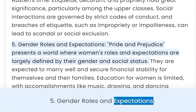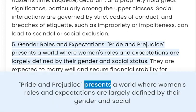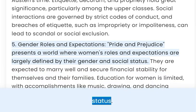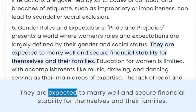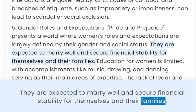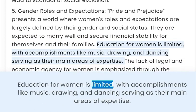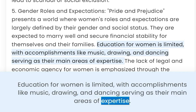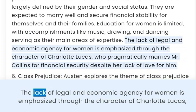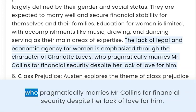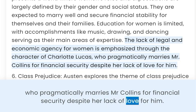5. Gender Roles and Expectations. Pride and Prejudice presents a world where women's roles and expectations are largely defined by their gender and social status. They are expected to marry well and secure financial stability for themselves and their families. Education for women is limited, with accomplishments like music, drawing, and dancing serving as their main areas of expertise. The lack of legal and economic agency for women is emphasized through the character of Charlotte Lucas, who pragmatically marries Mr. Collins for financial security despite her lack of love for him.